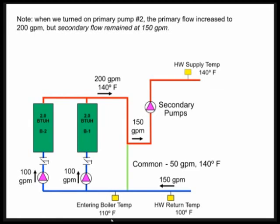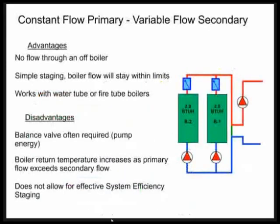Remember, when we turn on primary pump number two, the primary flow increased 200 GPM. And the secondary flow remained at 150. So there's some advantages and disadvantages of constant flow primary, variable flow secondary.